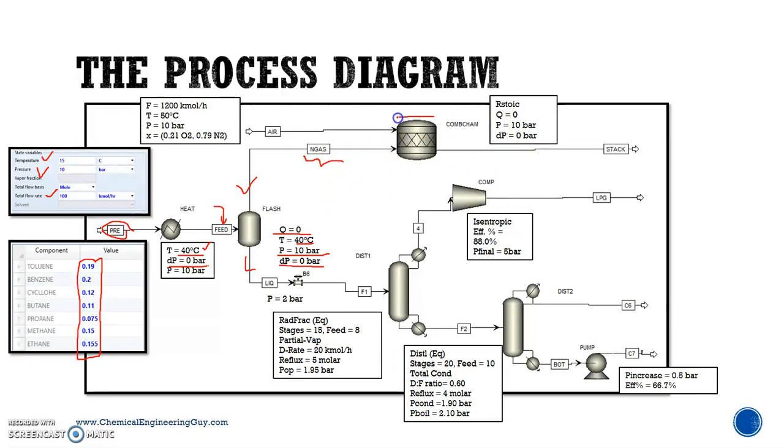Then it goes to this combustion chamber, a stoichiometric reactor which converts essentially all the hydrocarbons plus air (oxygen mostly, nitrogen is inert) to CO2 and water. We have this flow rate for the air - maybe it's excess air, we don't know yet.